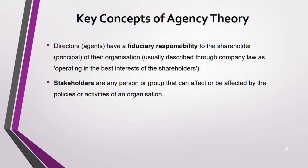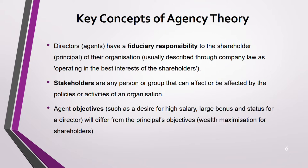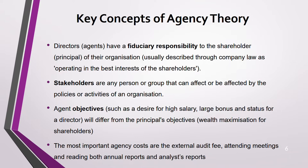A stakeholder is someone who can affect your organization or who can be affected by the activities of the organization — it can be either way. In agency theory we mostly talk about shareholders, who are just one type of stakeholder. Agent objectives might include a high salary, high bonus, or status — these differ from the principal's objective of shareholder value maximization. That difference is the root of the agency problem.